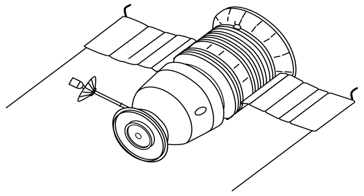Zond 6 flew around the moon on 14 November 1968 at a minimum distance of 2,420 kilometers. Photographs of the lunar near-side and far-side were obtained with panchromatic film. Each photo was 5x7 in 130x180 millimeters. Some of the views allowed for stereo pictures. The photos were taken from distances of approximately 11,000 kilometers and 3,300 kilometers.